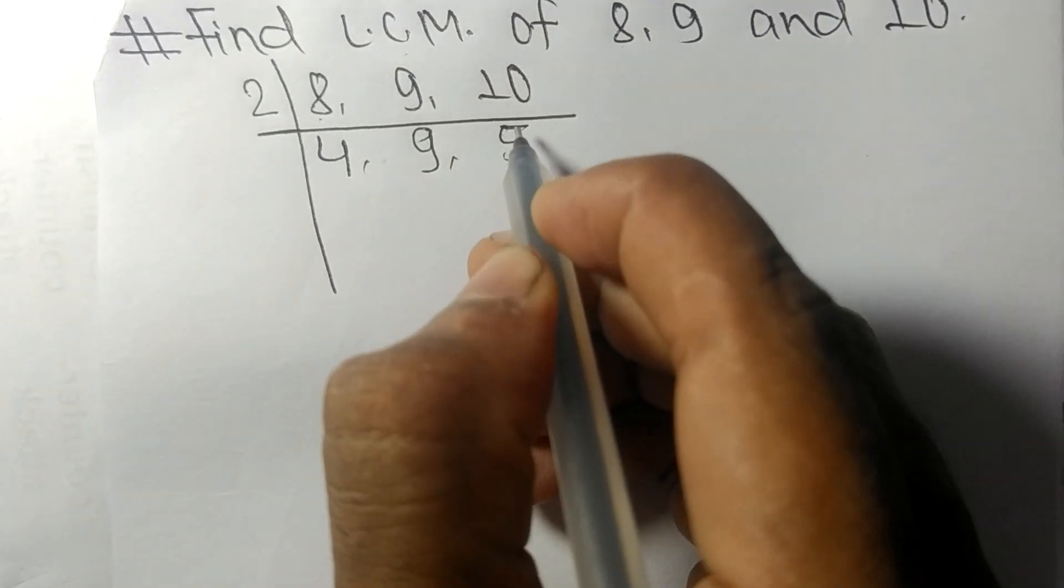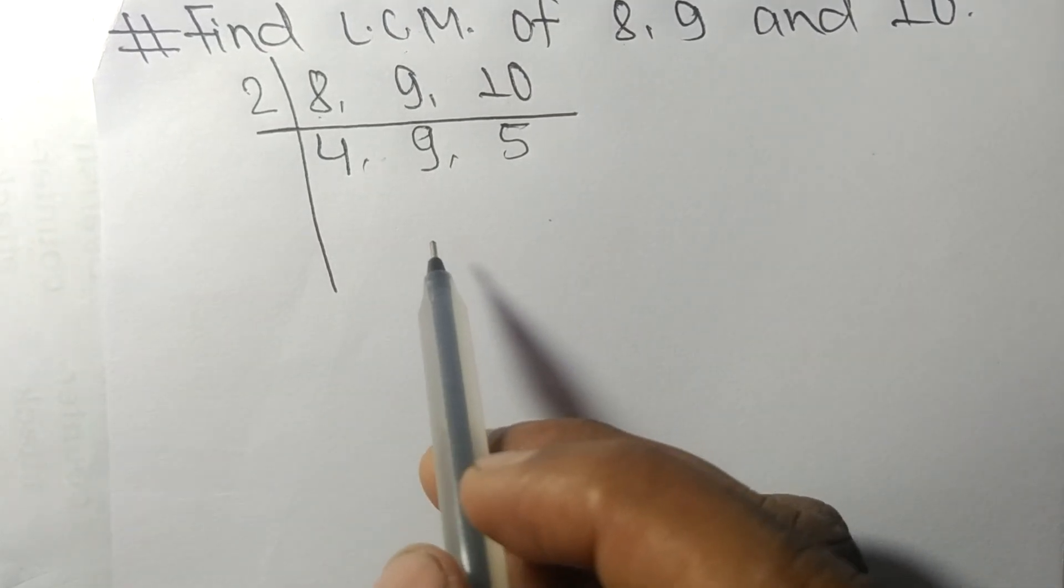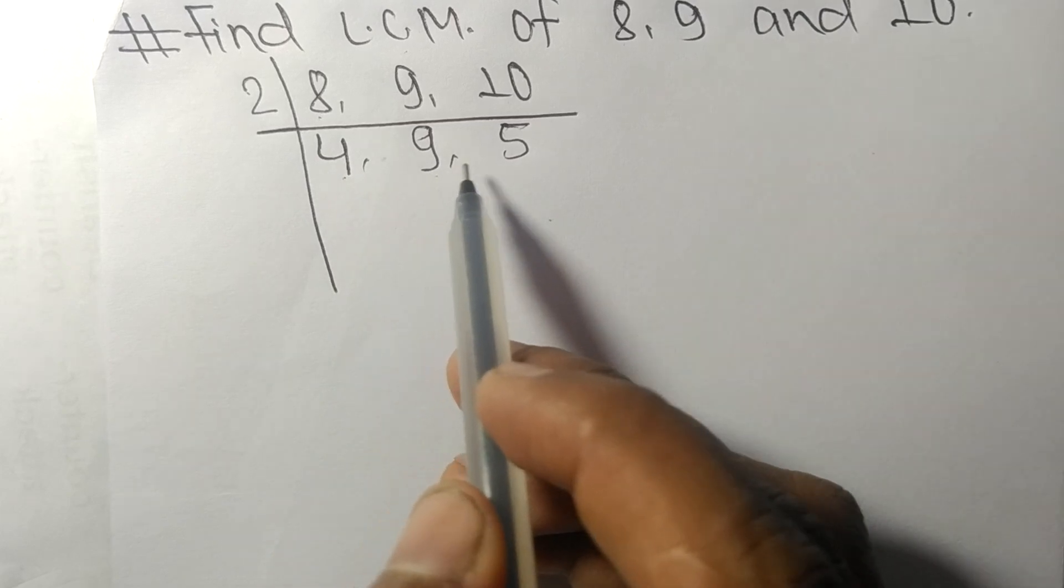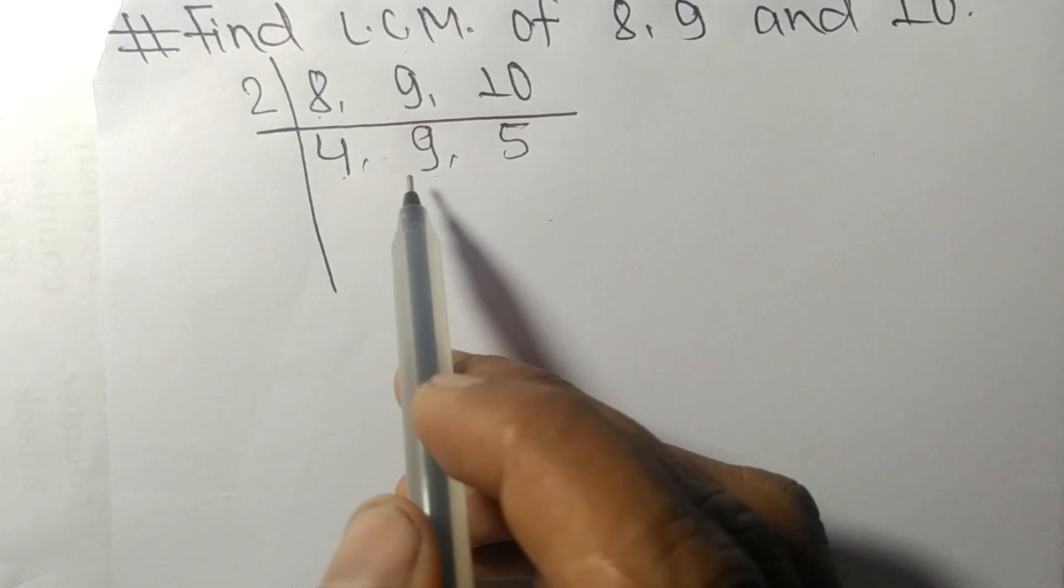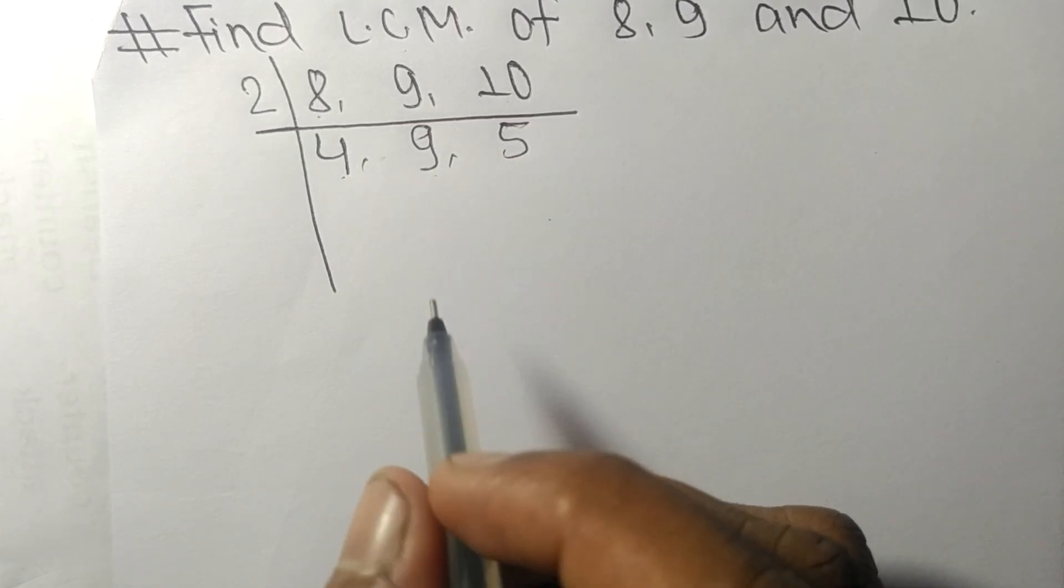2 times 5 means 10, so now we got 4, 9, and 5 which are not exactly divisible by the same number.